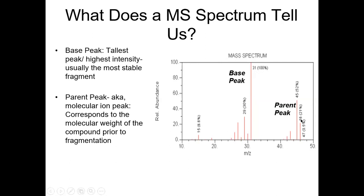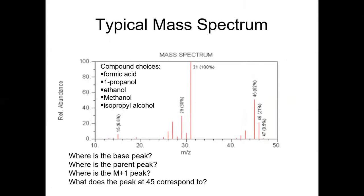The parent peak - also called the molecular ion peak - corresponds to whatever your compound is prior to breaking up into any fragments; it's the molecular weight. We have three to five compounds here: formic acid, 1-propanol, ethanol, methanol, and isopropyl alcohol. I want one person to look up the molecular weight for formic acid, one for 1-propanol, and someone for ethanol, methanol, and isopropanol. I'm going to switch to my iPad because I think it'll be more beneficial to go through this and annotate the spectrum.